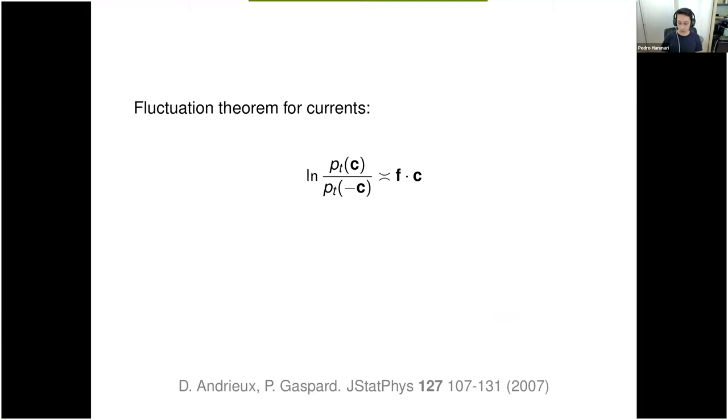First, let me recall this very important result of stochastic thermodynamics, which is really a cornerstone: the fluctuation theorem for currents. You can find it in this paper by Andrieux and Pierre Gaspard, which is the log ratio of the probability of measuring various currents of your system up to time t, over the probability of measuring the opposite of these currents, asymptotically equals the forces dot the currents themselves. By asymptotically, I mean this is valid for very long times.